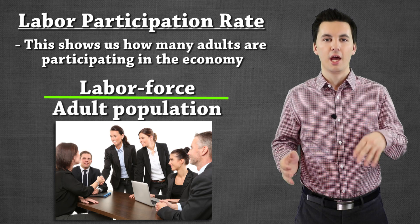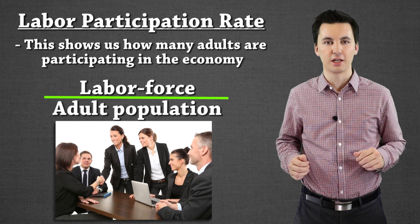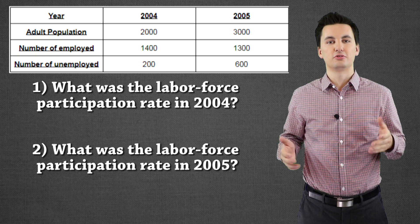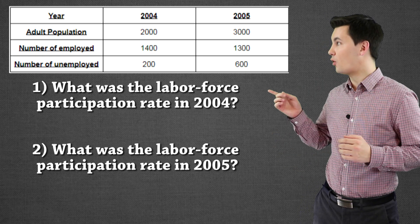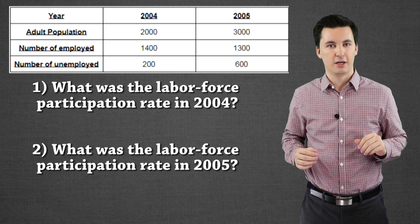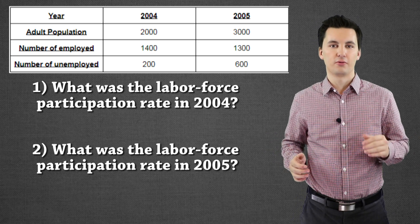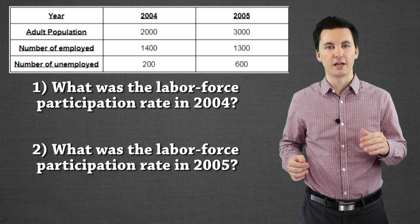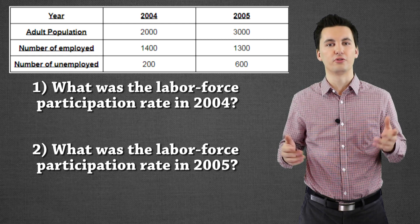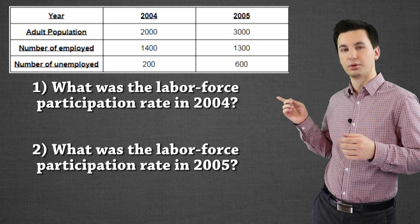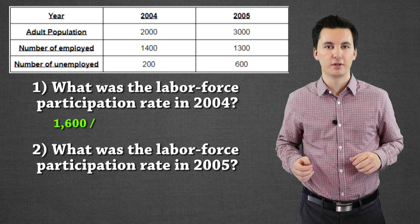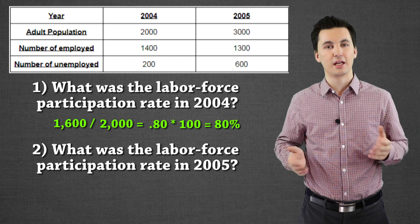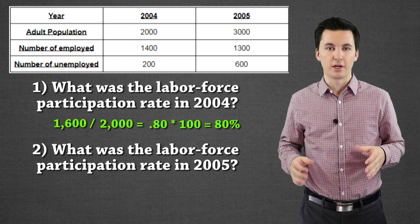Let's apply this concept with a couple of practice problems. On screen you can see two questions for two years: 2004 and 2005. Find the labor force participation rate for each. For 2004, we take our total labor force and divide it by our adult population. Taking employed plus unemployed — we get 1,600 — and we divide that by 2,000. We get 0.80, times 100 gives us 80 percent. So we have a participation rate of 80 percent — that's pretty good.